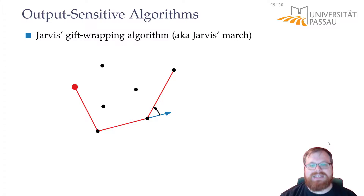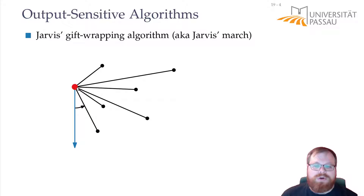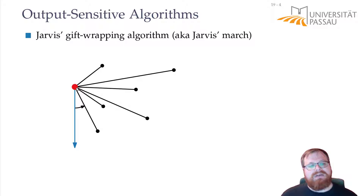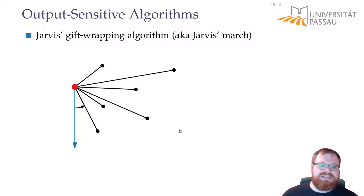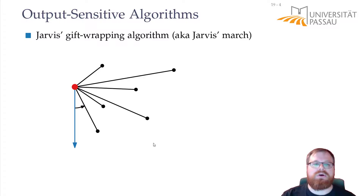The question is: what is the runtime of this algorithm? How much time do we need in every step? First, we have to find the leftmost point — that is very easy, we can do this in O(n) time. Then we have to find what is the next point in radial order. We simply compare all the points and find the lowest angle, so we do this in O(n) time as well.